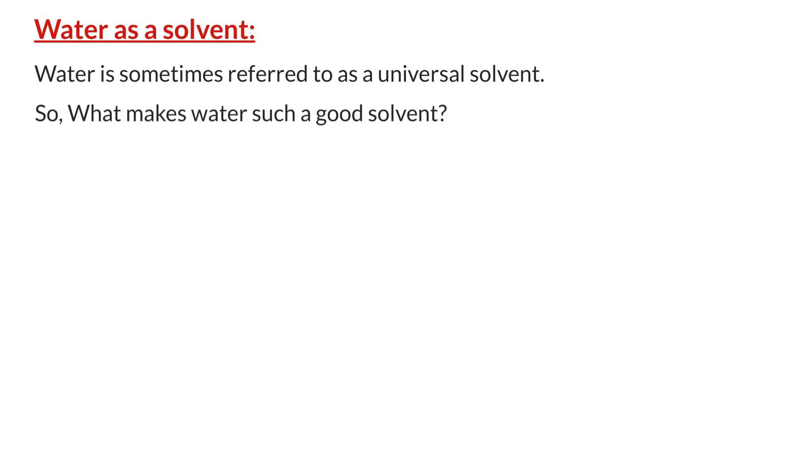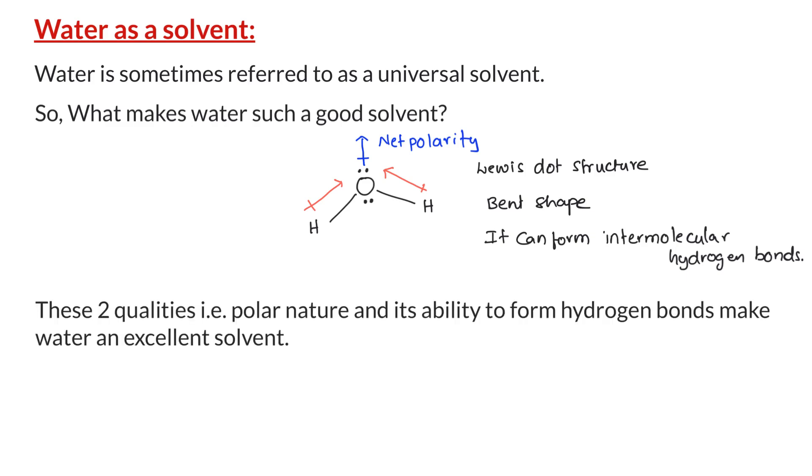So, what makes water such a good solvent? We discussed in the earlier videos that the individual bonds on the water molecule are polar, and because of its asymmetric shape, which is the bent shape, water molecule has net polarity. In addition, there are hydrogen atoms directly connected to oxygen atom in the molecular structure of water. Therefore, it can form hydrogen bonding. These two qualities, that is, the polar nature and its ability to form hydrogen bonds, makes water an excellent solvent.